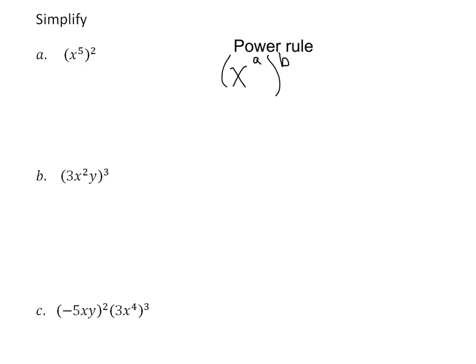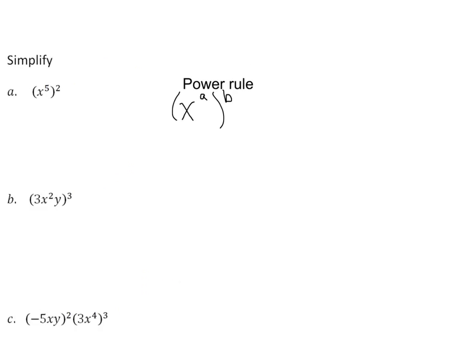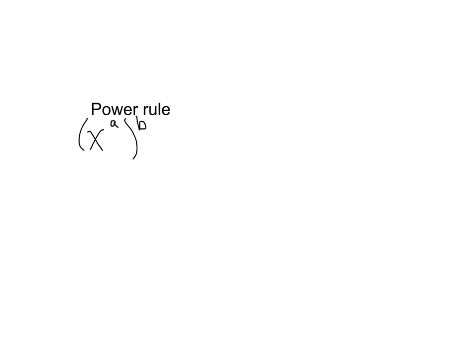I'm going to give you a pretty simple example over here. Let's say we've got x squared and then we raise that to the third power. What would that be equal to? That would be x squared times x squared times x squared. And now we can use the product rule that says, what do we do with the exponents of all of these?